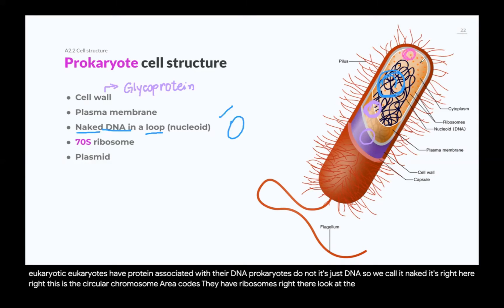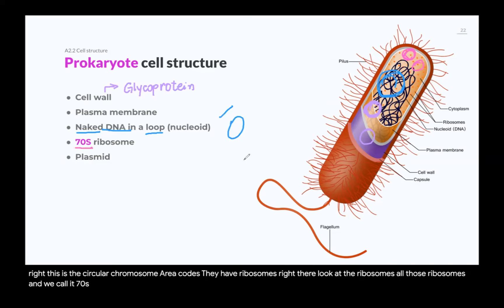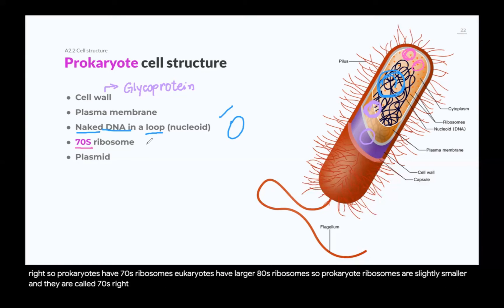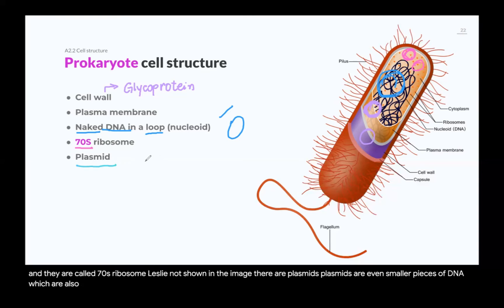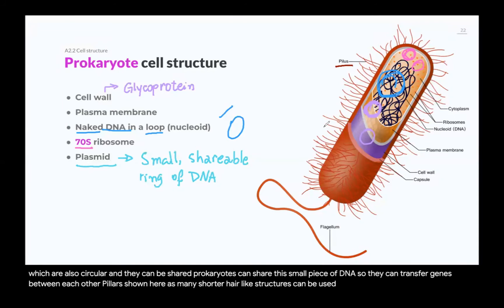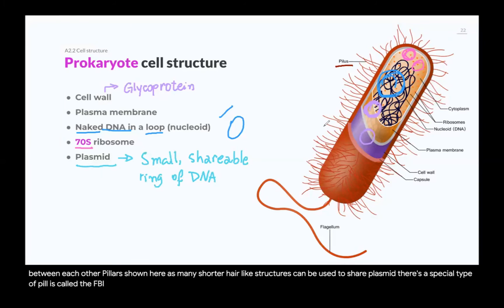Prokaryotes have ribosomes — all those ribosomes — and we call them 70S ribosomes. The 'S' relates to sedimentation rate, which in the end corresponds to size. Prokaryotes have 70S ribosomes, while eukaryotes have larger 80S ribosomes. Prokaryotes also have plasmids: even smaller pieces of circular DNA that can be shared between cells, allowing gene transfer. The pilus — shown here with many shorter hair-like structures — can be used to share plasmids. A special type called the F-pilus acts as a cable connecting two bacteria so they can share a plasmid.